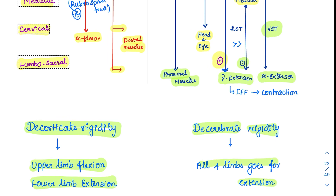For your exam, remember this simple mnemonic: in 'decorticate,' count the number of E's — there are two E's — so two limbs go for extension, meaning the lower limbs extend while the upper limbs flex. In 'decerebrate,' count the E's: one, two, three, four — four E's — so all four limbs go for extension.